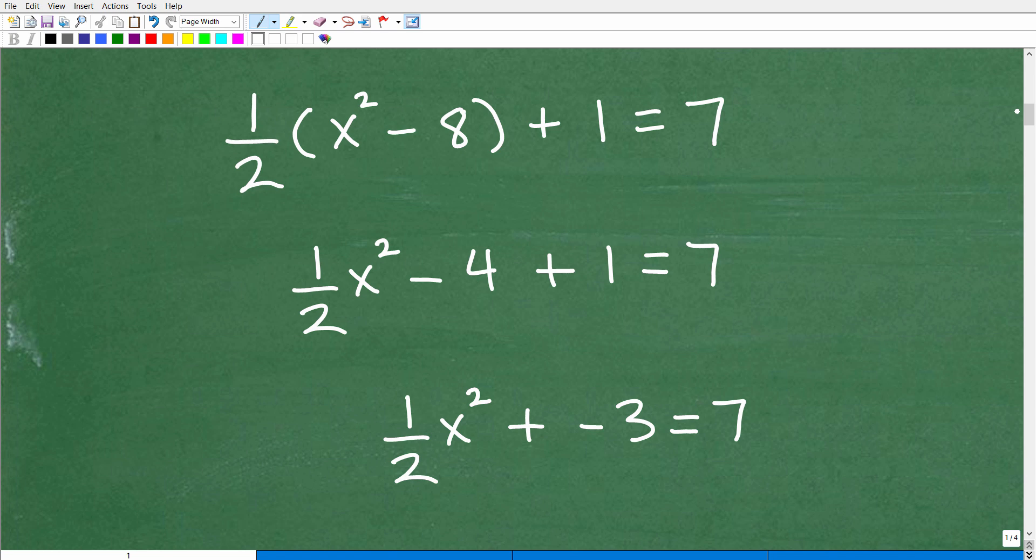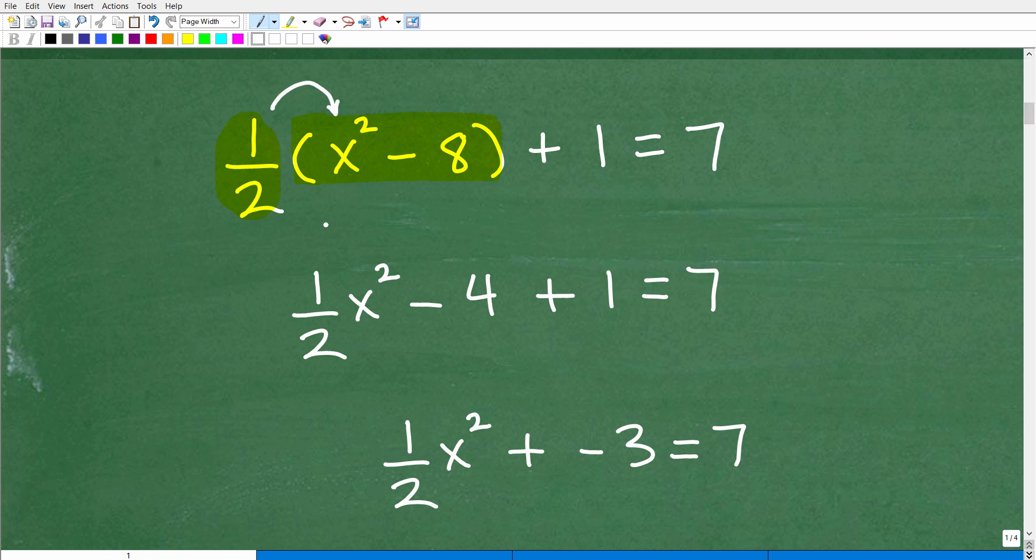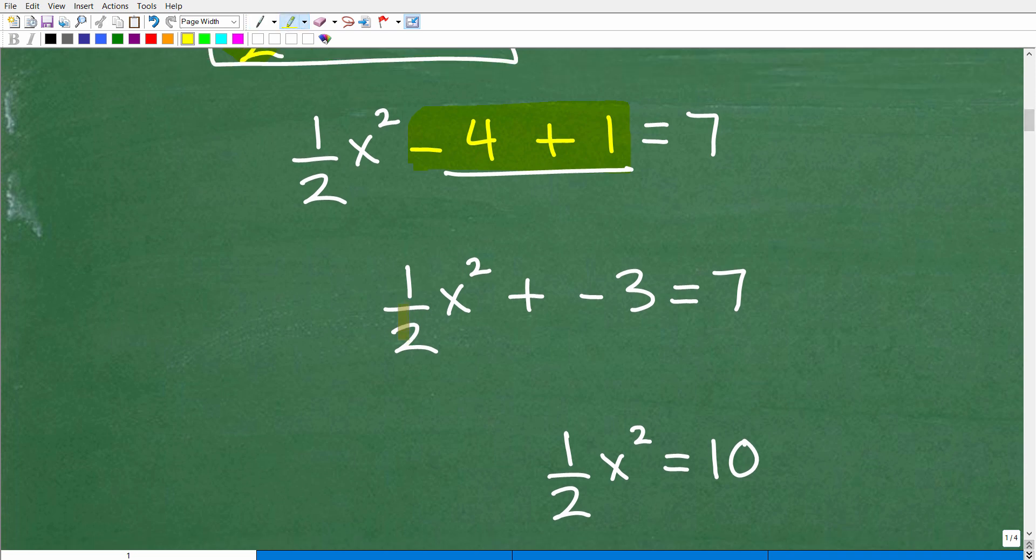But let's go ahead and get into this problem right now. We've got 1/2 times (x² - 8) + 1 = 7. So what should be our first move? Well, right here we have some parentheses. We have this number outside of these parentheses. So anytime you can apply the distributive property, you want to go ahead and do that. So we can take this 1/2 and multiply it by that x². So that's going to be 1/2 x². And then this 1/2 times that 8, 1/2 times 8 is 4.